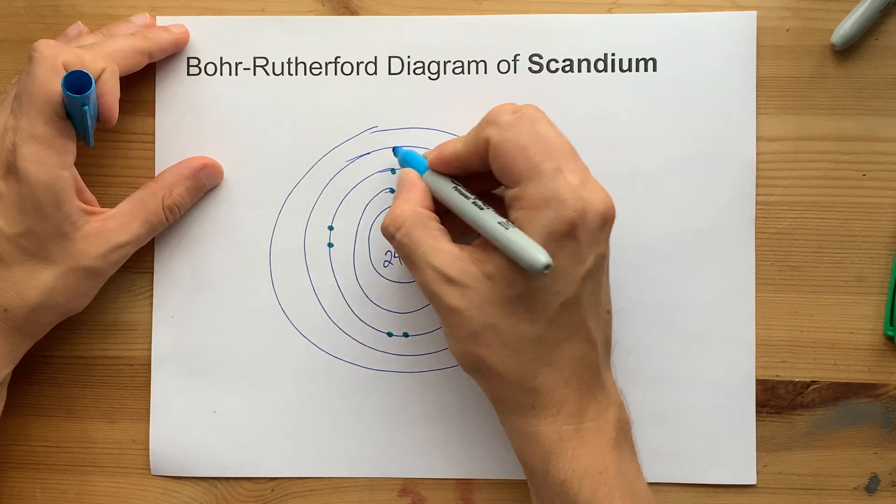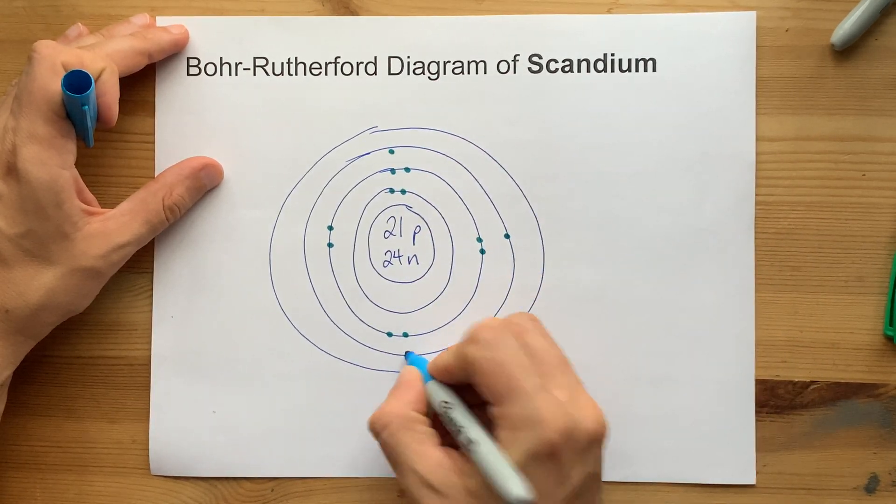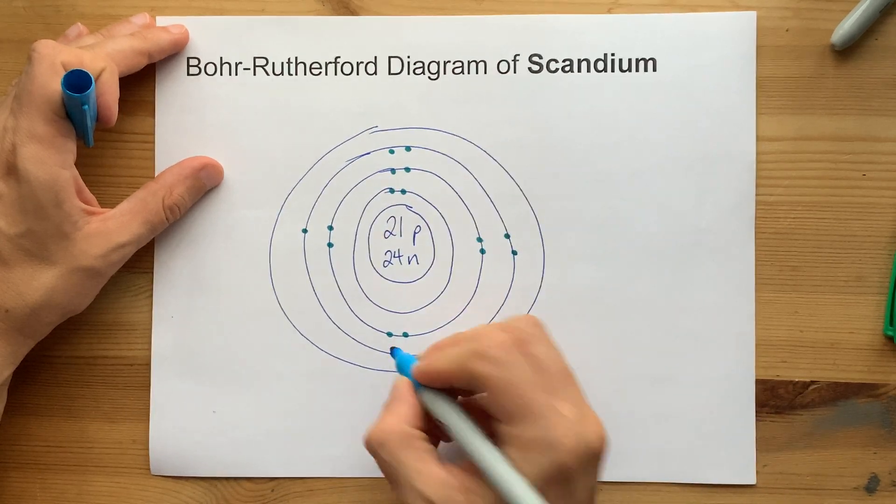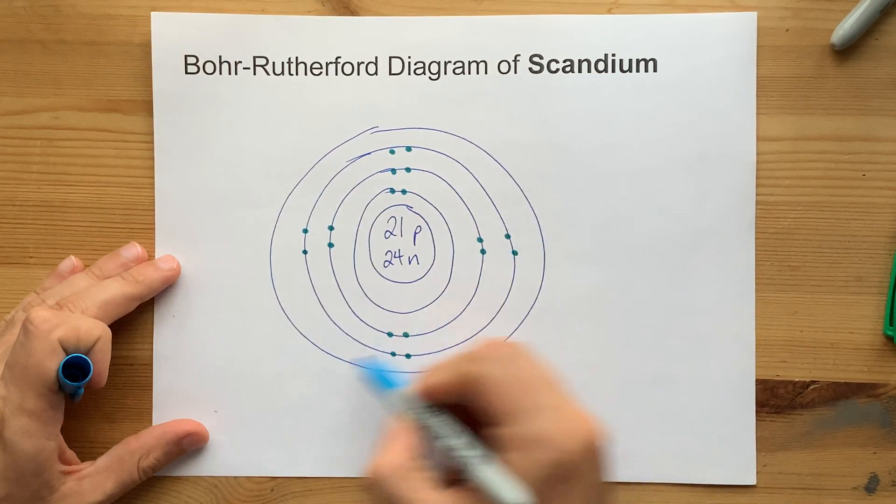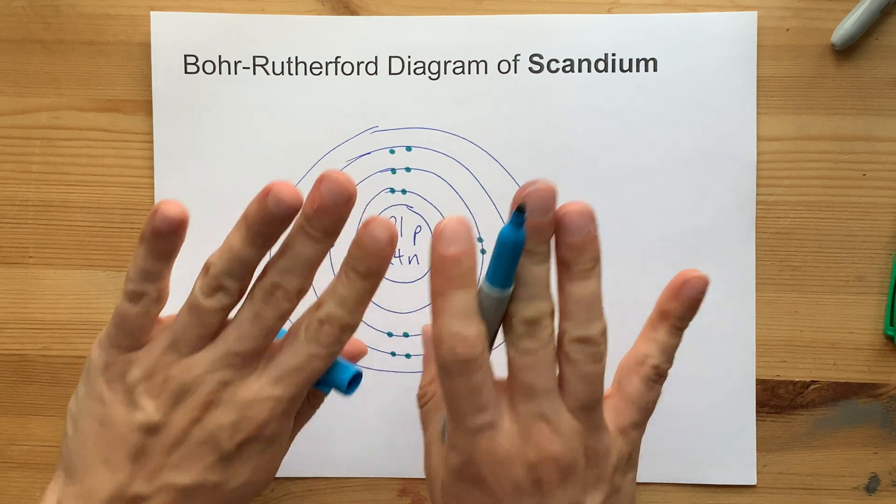I put two electrons in the first shell. Now one, two, three, four, five, six, seven, eight electrons in the third shell. And that's the limit for now.